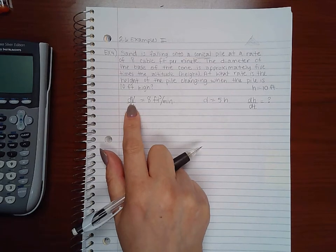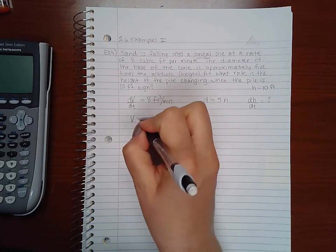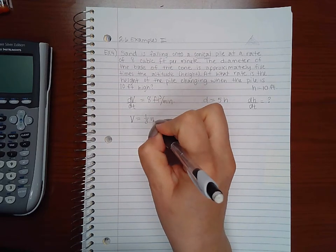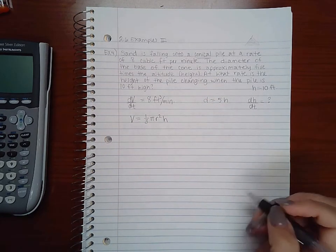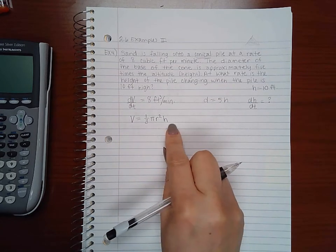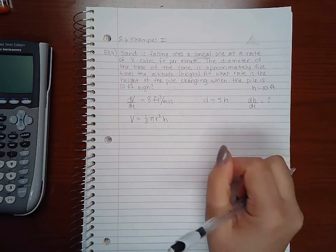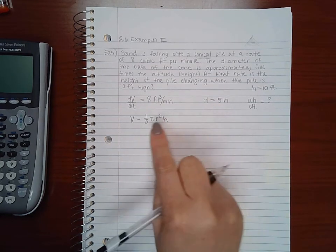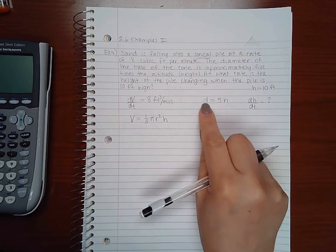Okay, so we do have dV/dt, so we do need to use the volume function. The volume of a cone is 1/3 π r² h. You can only have one variable if you're going to figure this out, which means I will need to use this information to figure out what to substitute in there for r.